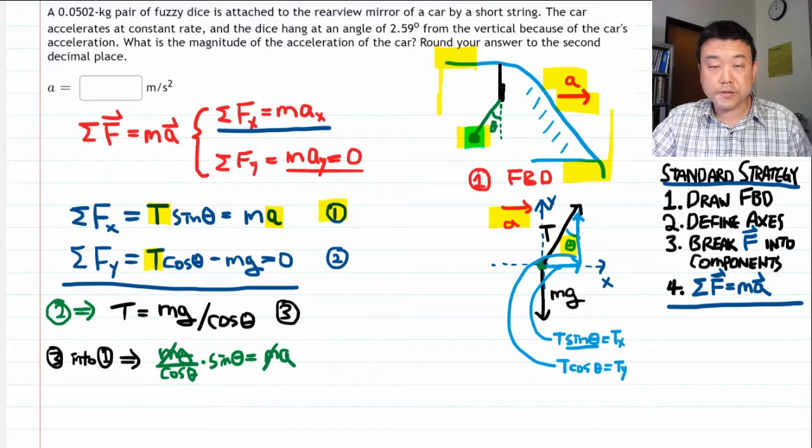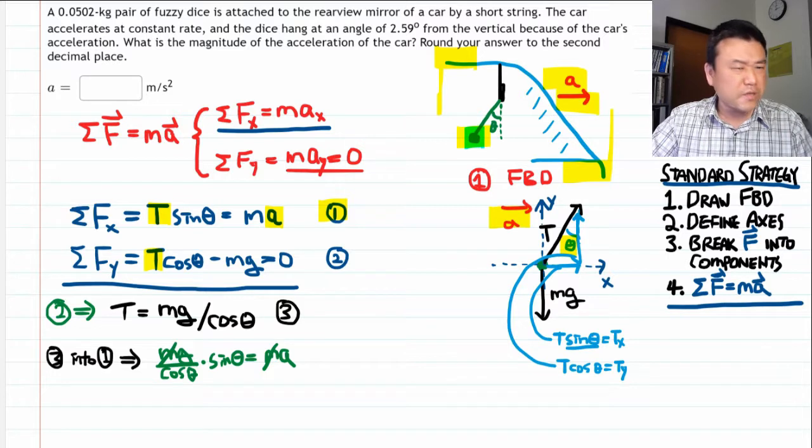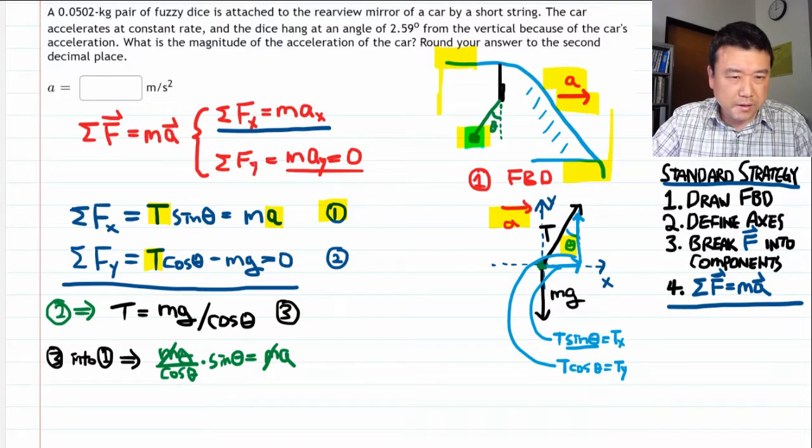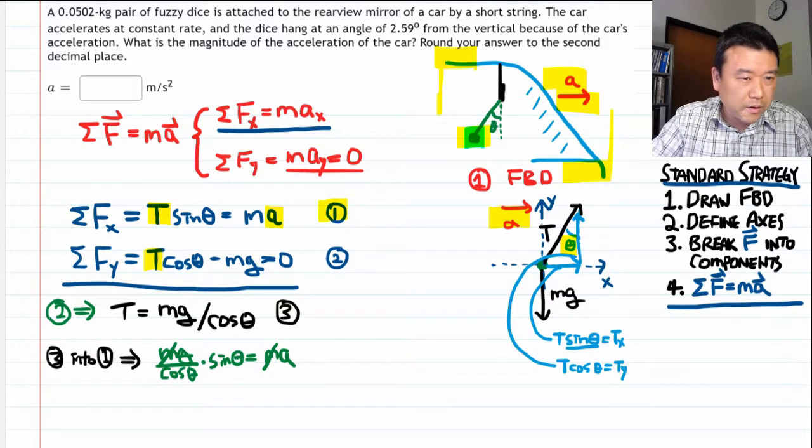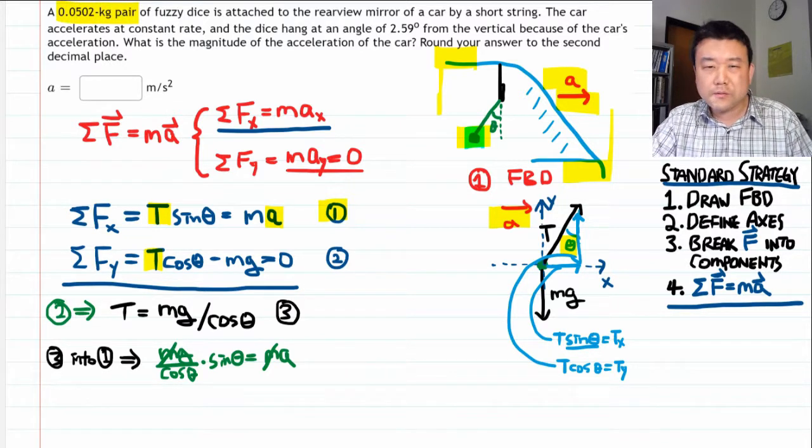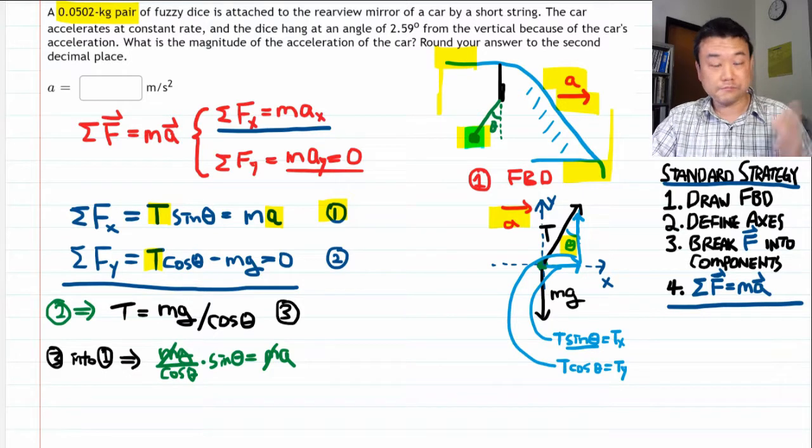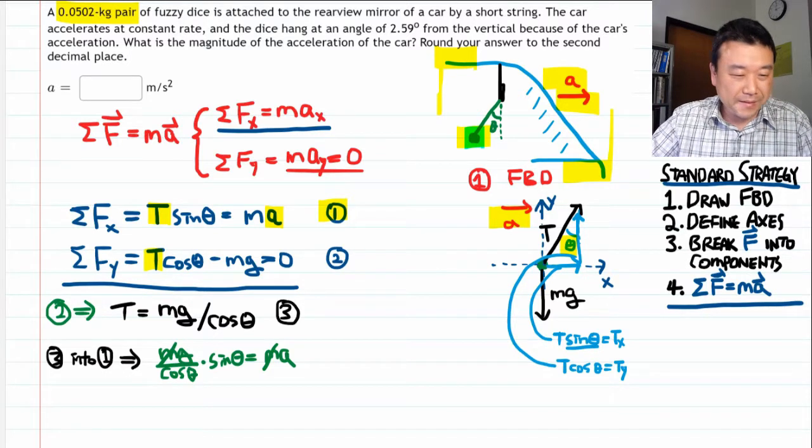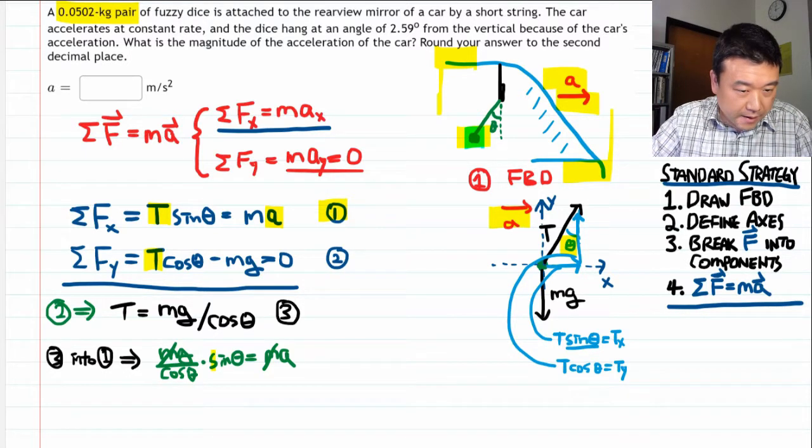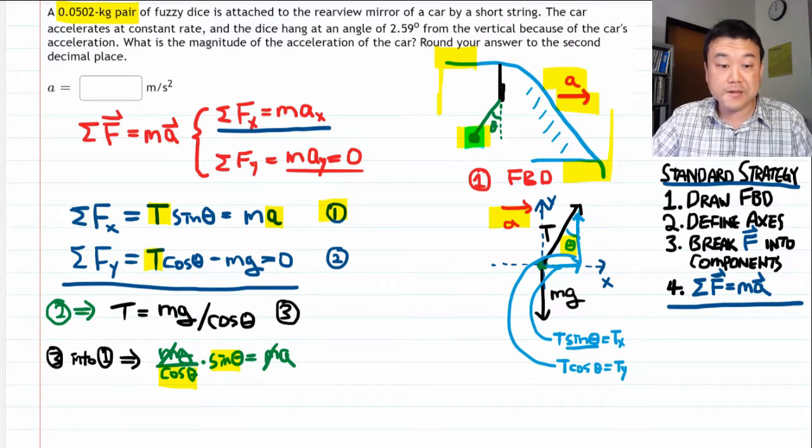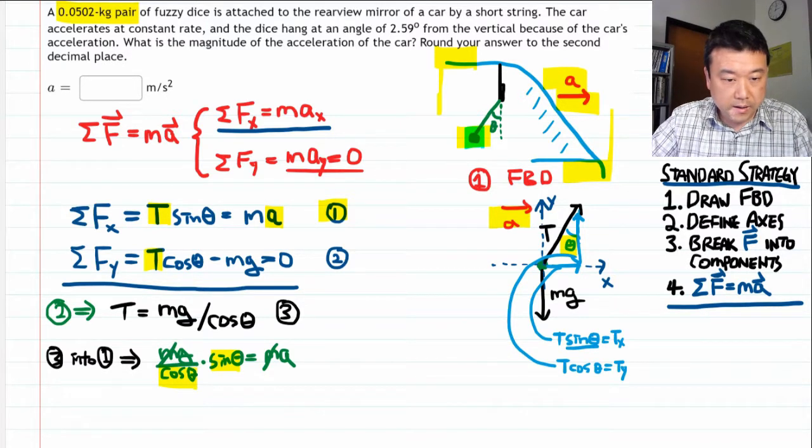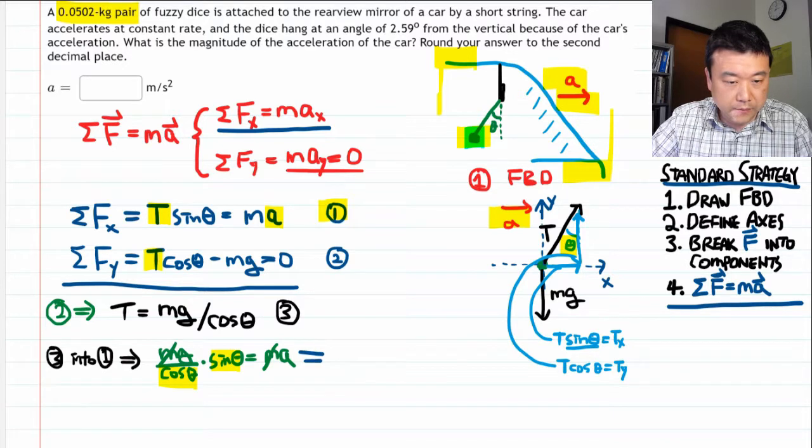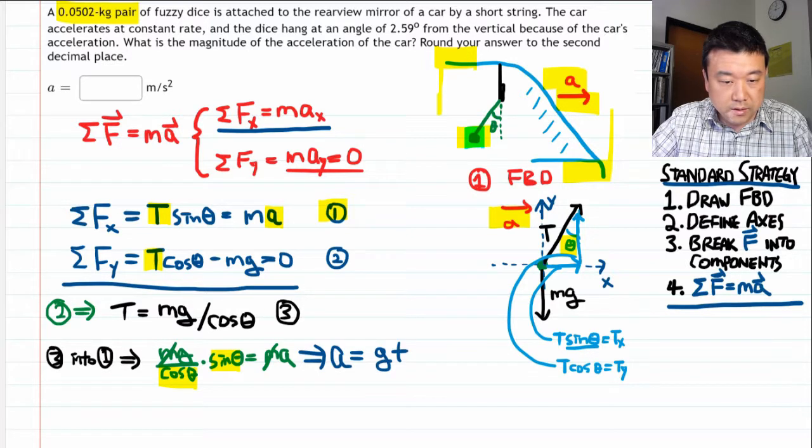Oh, mass cancels out. So I guess we didn't need to know the mass of the dice, which is good because I was a little bit unsure how this mass applied to the pair of dice. Well, it doesn't matter. So we can simplify sine theta over cosine theta as tangent theta. And with that little bit of simplification,